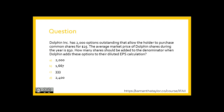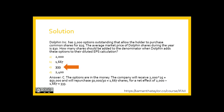Would it be A: 2,000? B: 1,667? C: 333? Or D: 2,400? The correct answer is C: 333.